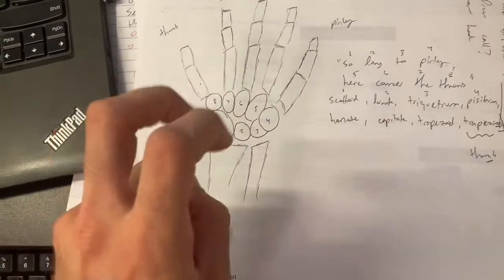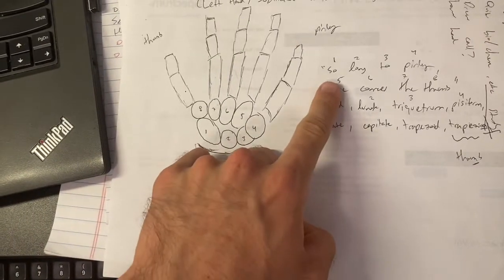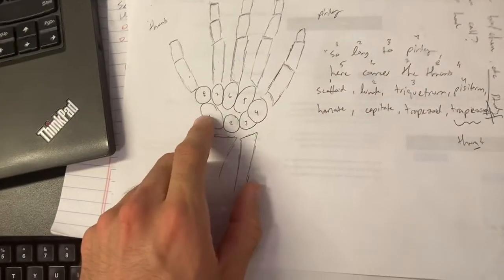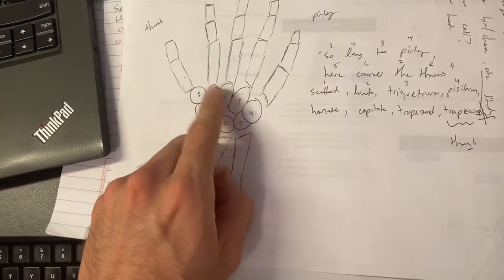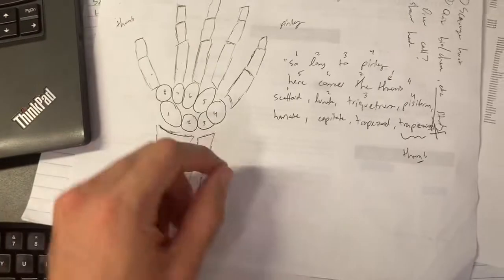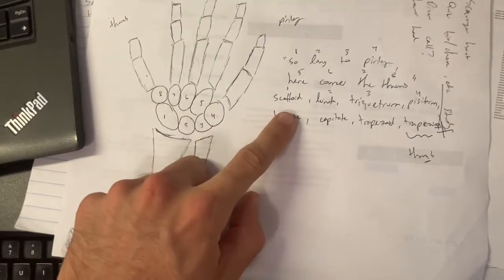The little story to remember is so long to pinky. So you're walking away from the pinky. Here comes the thumb. So you're on your way back to the thumb. This stands for the following bone names.